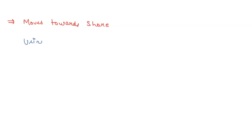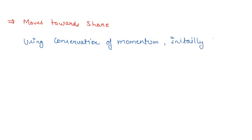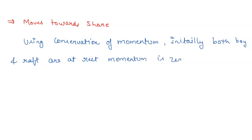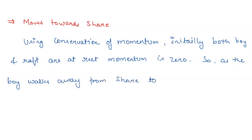The reason is using conservation of momentum. Initially, both the boy and the raft are at rest, so the total momentum is zero. As the boy walks away from the shore, to keep the total momentum zero, the raft must move in the opposite direction.